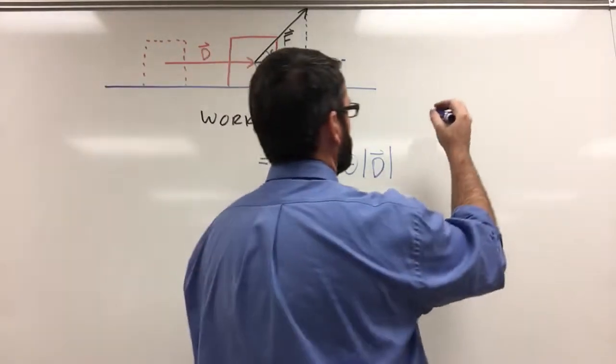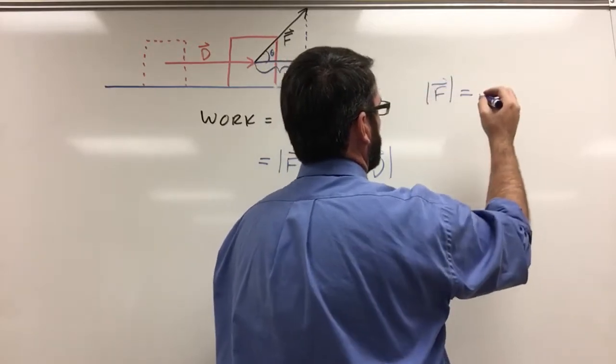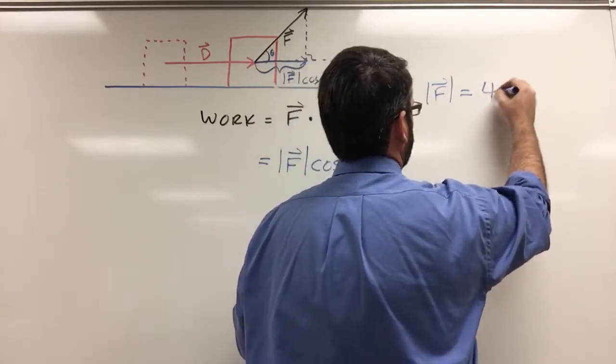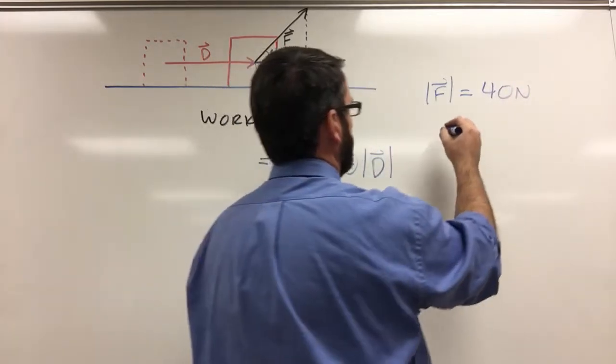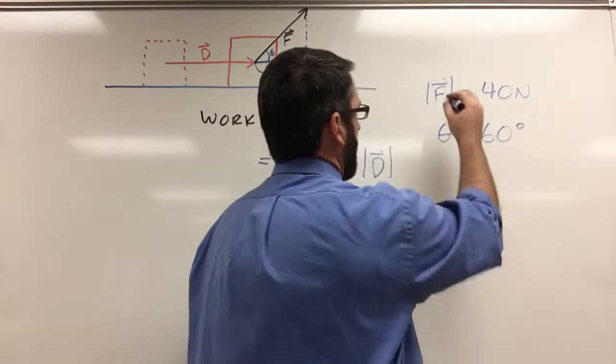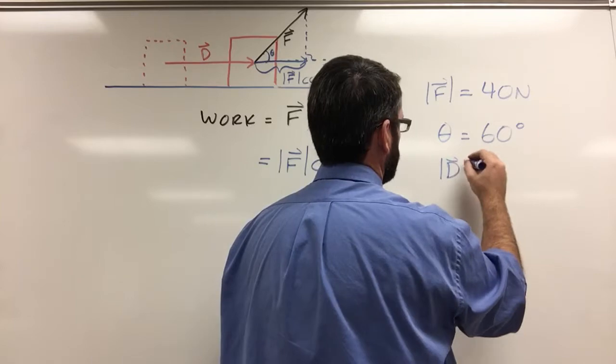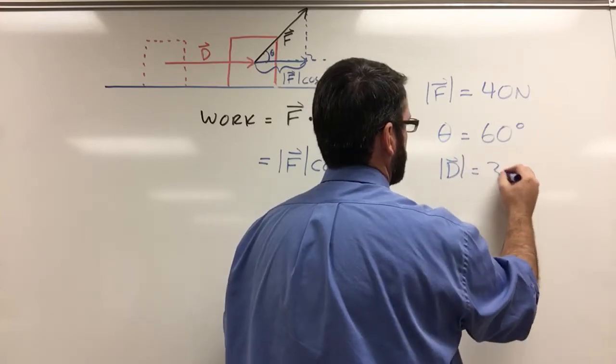So in this case, we're told that the magnitude of F is equal to 40 newtons, and the angle is 60 degrees, and the magnitude of the displacement is 3 meters.